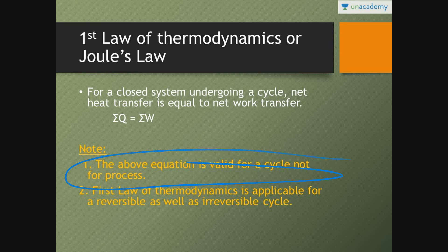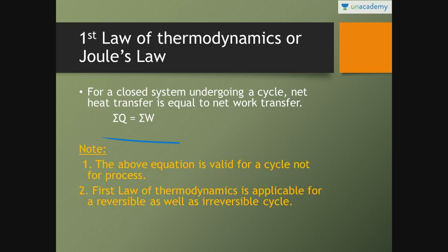First law is valid for a cycle, not for a process. If any question comes in the exam asking whether the first law is valid for a reversible cycle or irreversible cycle, the simple first law states that it is valid for reversible as well as irreversible cycles. That is, sigma Q equals sigma W is valid for a reversible as well as irreversible cycle.